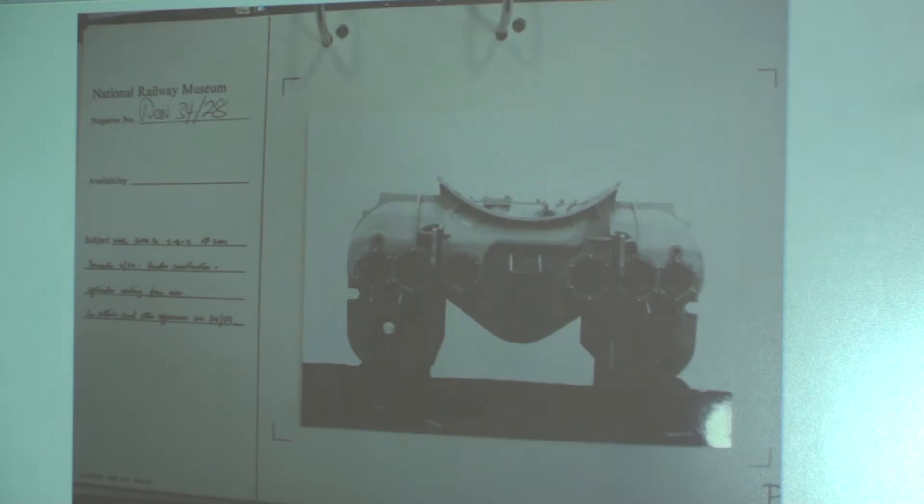And the way the locomotives are designed is the boiler is anchored at the front end of the engine, it's anchored onto those steam chests, and the rest of the boiler down the engine is free to move.